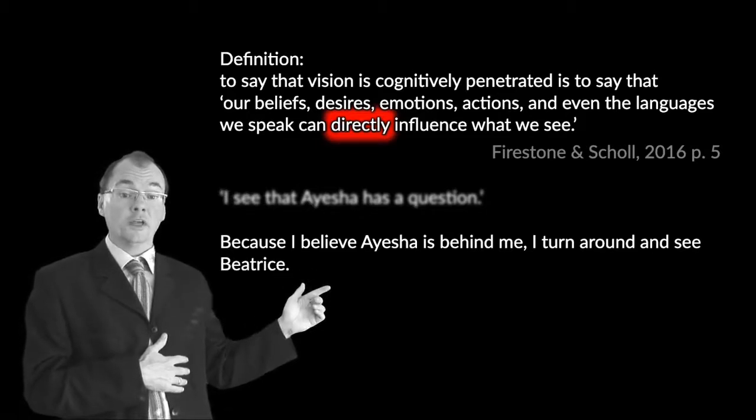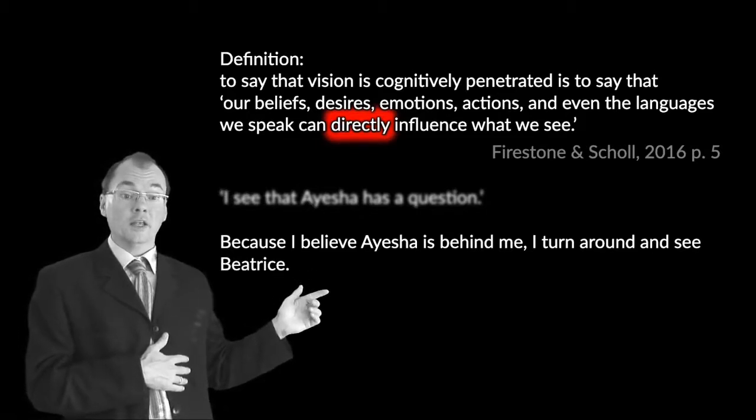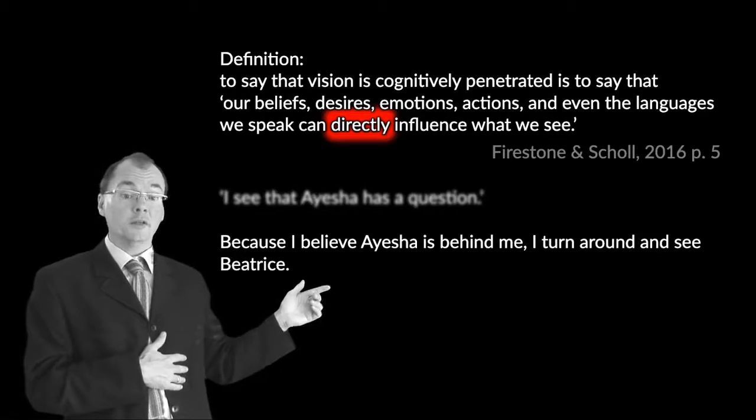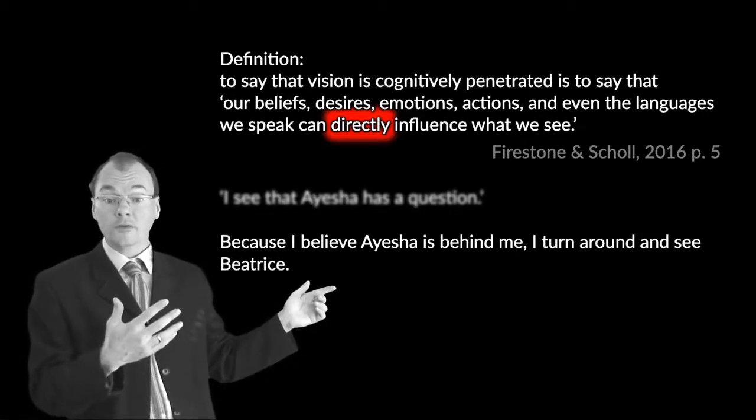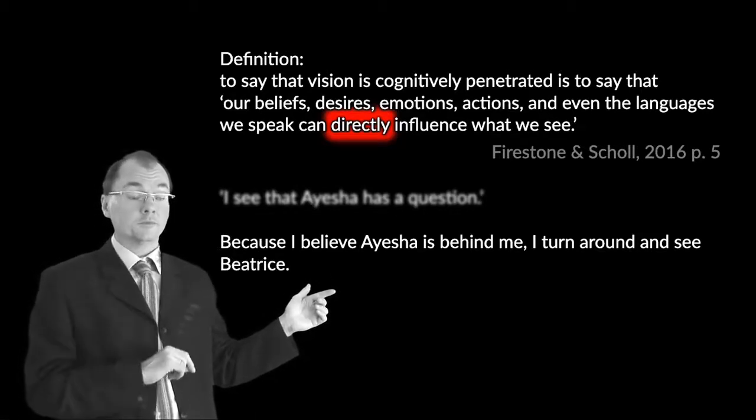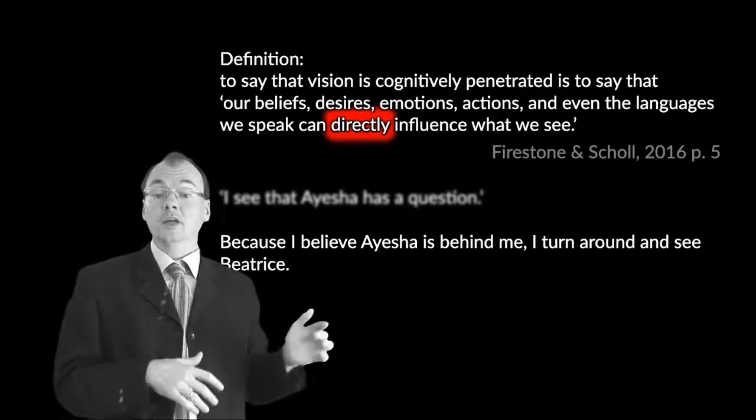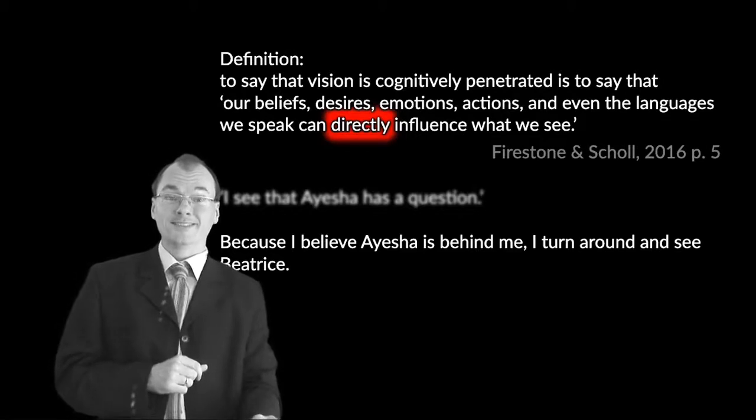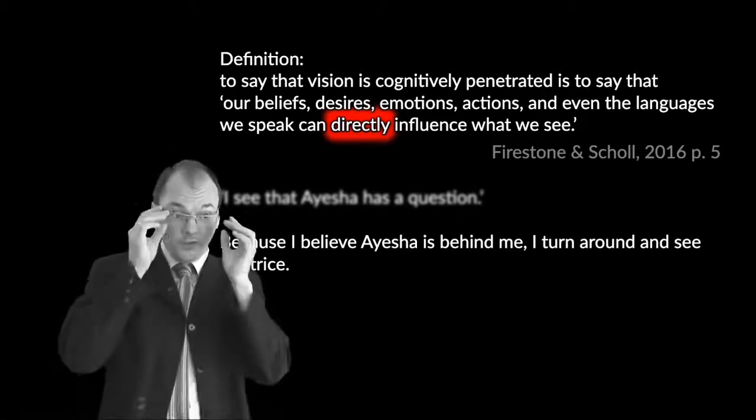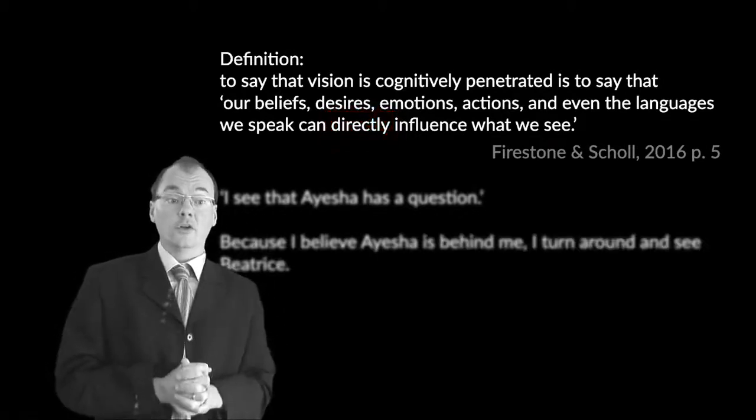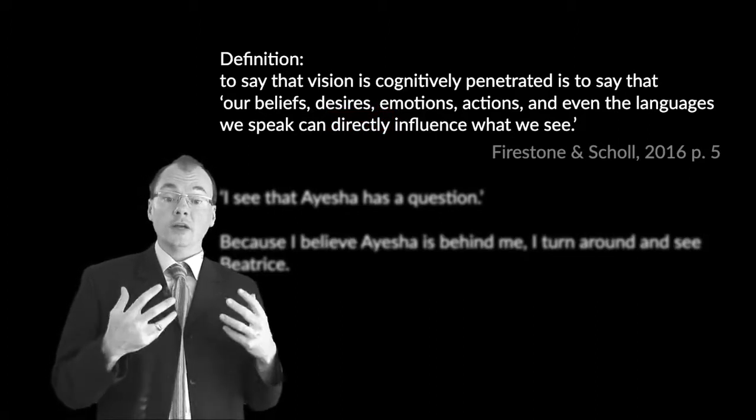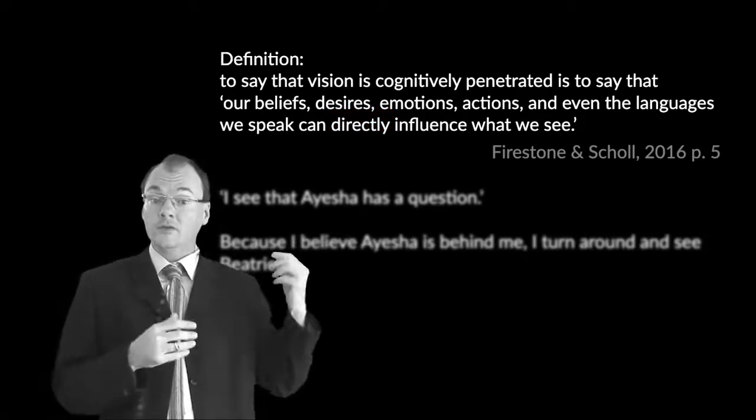My belief that Aisha is behind me does influence what I see. Namely, it influences whether or not I see Beatrice. I wouldn't have seen her otherwise. But that's not a case of cognitive penetration because it doesn't count as direct, whatever exactly direct means. So we've seen that there are two cases of not cognitive penetration. I just hope that helps us to understand the definition here a little better.